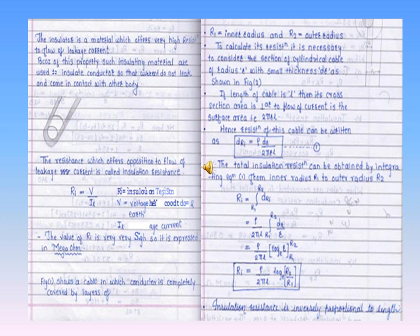Insulation resistance is the resistance offered by the insulating material to the flow of leakage current through it. We denote it as Ri = V / IL, where V is the voltage between the conductor and earth, and IL is the leakage current. The practical value of Ri is very high, lying in the range of mega ohms. Typical insulators are air, glass, mica, porcelain, rubber, oil, and varnish.